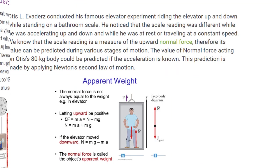Otis Elevaders conducted his famous elevator experiment riding the elevator up and down while standing on a bathroom scale. He noticed that the scale reading was different while he was accelerating up and down and while he was at rest or traveling at a constant speed. We know that the scale reading is a measure of the upward normal force, therefore its value can be predicted during various stages of motion. The value of normal force acting on Otis's 80 kilogram body could be predicted if the acceleration is known. This prediction is made by applying Newton's second law of motion.